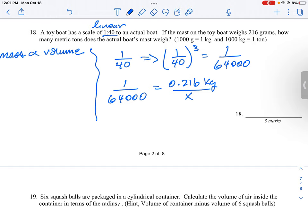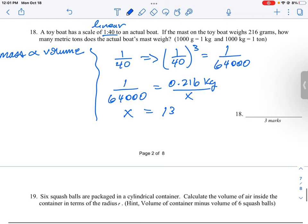So to solve for x, we just cross multiply the two. So it's 1 times x, and then it's going to be 64,000 times 0.216, which is going to be 13,824 kilograms. And we're actually being asked to probably convert